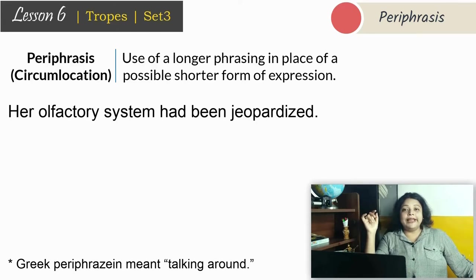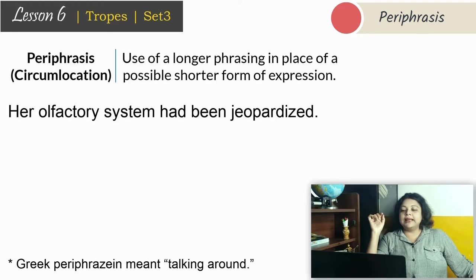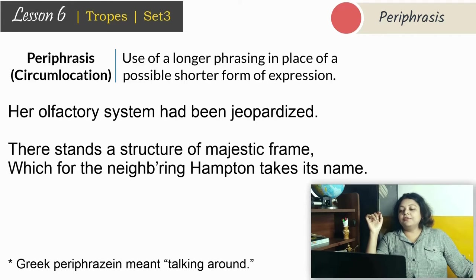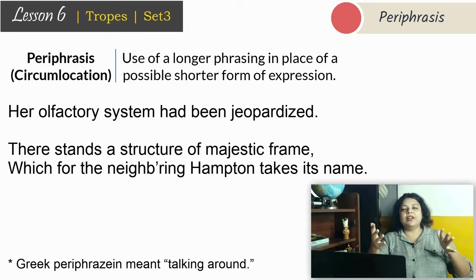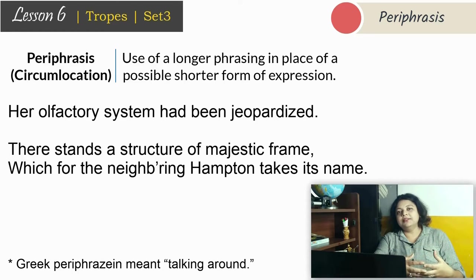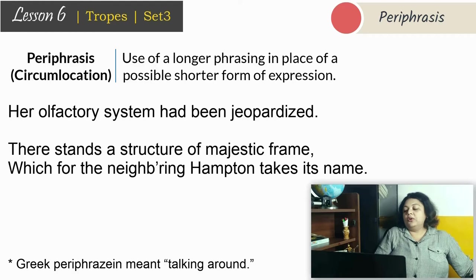Here is an example from Alexander Pope's The Rape of the Lock: 'There stand the structure of majestic frame, which for the neighboring Hampton takes its name.' This is about Hampton Court, where the poet is using so many varieties of words and expressions to talk about this majestic castle of Hampton. This is periphrasis.